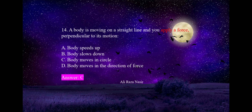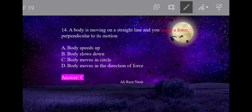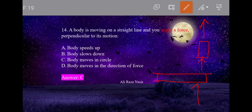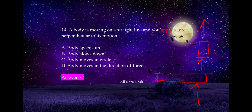Next: a body is moving in a straight line and a force is applied perpendicular to its motion. When a body is at rest and force is applied, it moves in that direction. But when a body is already moving and force is applied perpendicular, it bends at 90 degrees. If the force continues, the body moves in a circular path. Option C is correct: body moves in a circle.